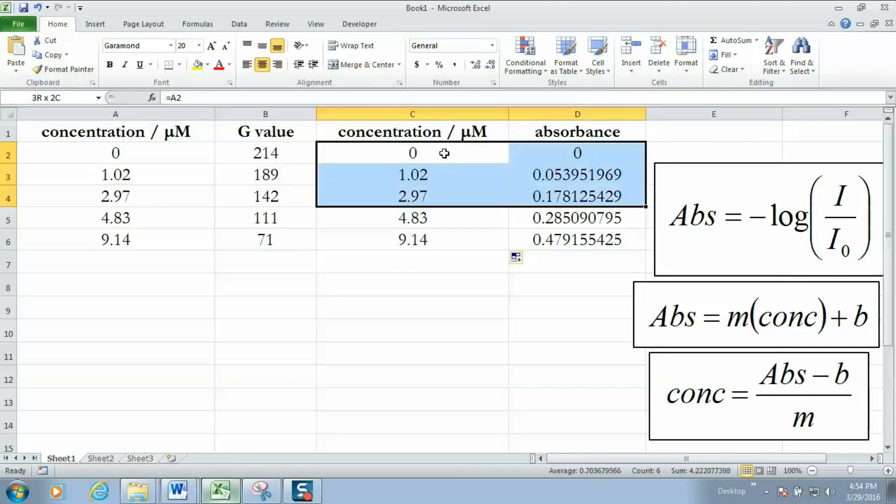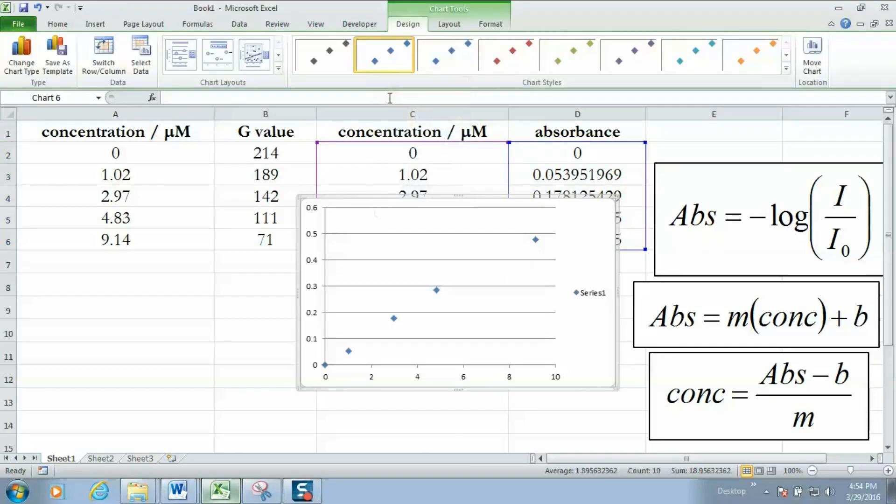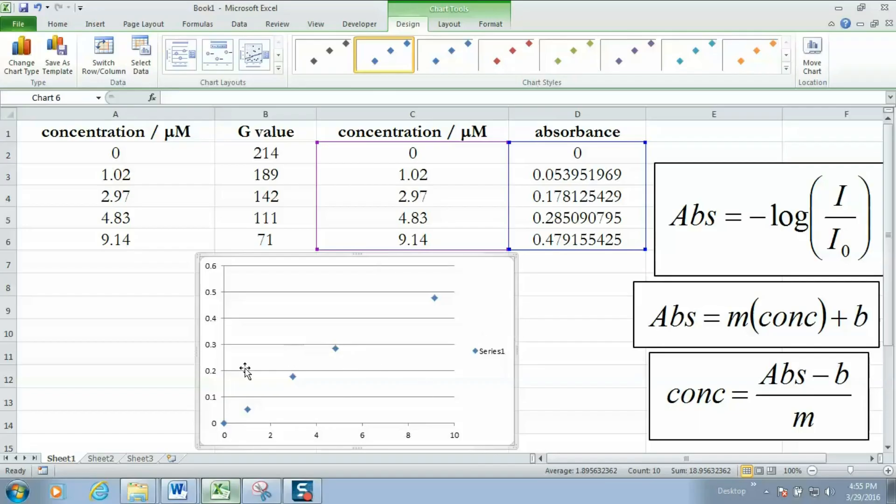I'm going to highlight the data and we're going to plot them. I'm going to insert a scatter plot and our data look fairly linear. In our plot here you should recognize that the y-axis represents absorbance and the x-axis is going to represent concentration in units of micromolar.